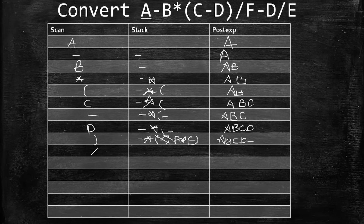Scan slash — compare with * on top of stack. Slash and * have equal priority; equal priority also means pop. So pop * and push to PostExp. PostExp becomes A B C D minus *. Now minus and slash remain; slash has higher priority than minus, so push slash. Stack: minus, slash.